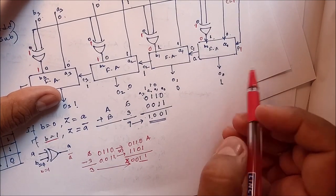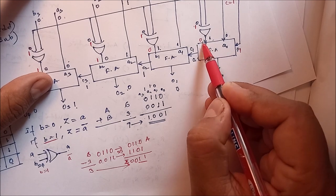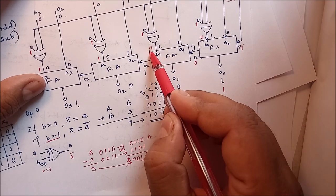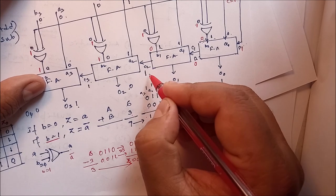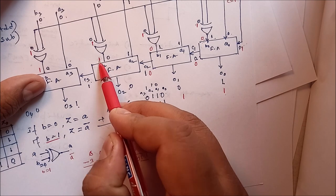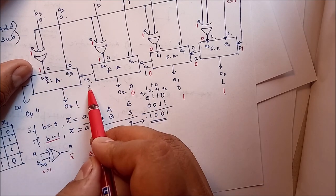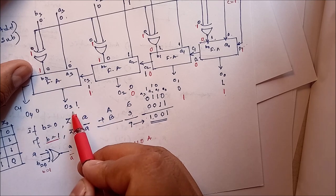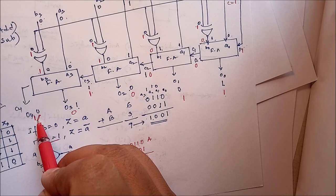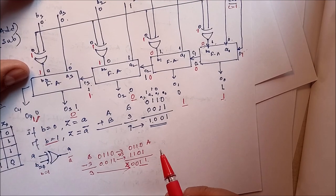Now with c equal to 1, perform the addition: 0 plus 0 plus 1 gives sum 1, carry 0. Then 0 plus 1 plus 0 gives sum 1, carry 0. Then 1 plus 1 plus 0 gives carry 1. Then 1 plus 0 plus 1 gives sum 0, carry 1. We discard this final carry. So the answer is 0, 0, 1, 1 — which is 3.